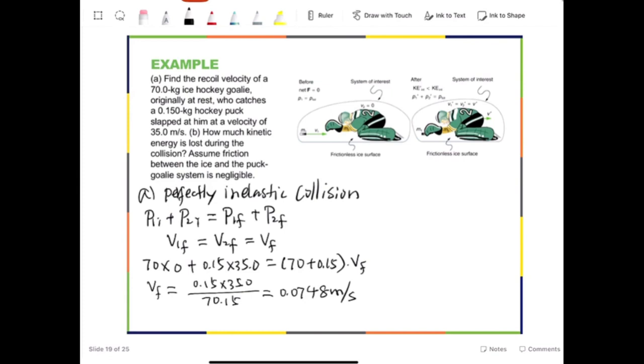Now, let's look at part B. How much kinetic energy is lost during the collision? Assuming friction between the ice and the puck goalie system is negligible. Which is understandable, because the ice does have friction. The friction is very small. Also, during the collision, the collision happens very fast. During the collision, the impulse by the friction is very, very small. That's why we can neglect that.